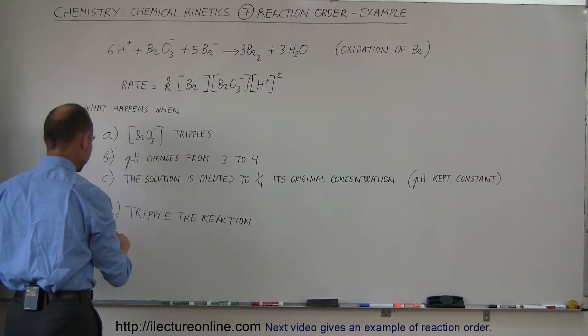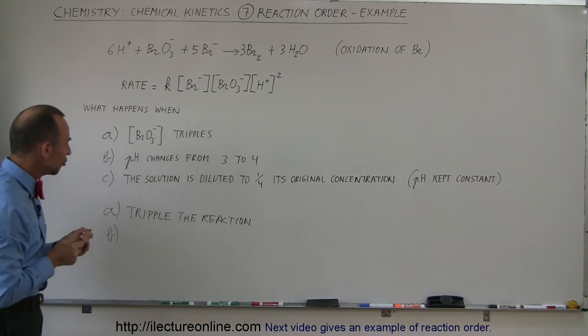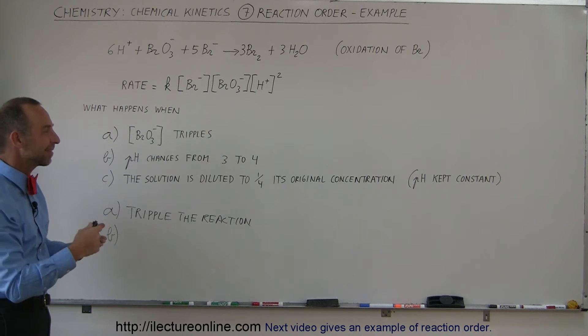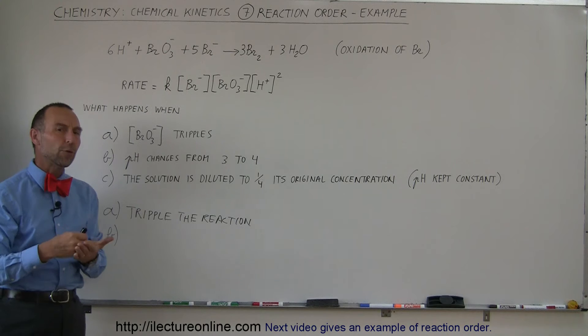All right, what about part B? Here we're going to change the pH of the solution from 3 to 4. So it's still acidic, but it's less acidic. Now going from 3 to 4, that means that we reduce the concentration of the hydrogen ion by a factor of 10.